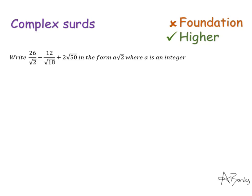So this question here says write 26/√2 - 12/√18 + 2√50 in the form a√2 where a is an integer. I can tell here what they're wanting me to do is simplify any surds I've got and rationalize any denominators so that I can get it into that form.